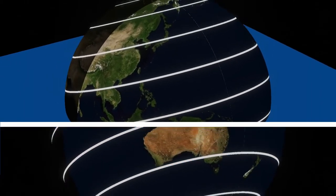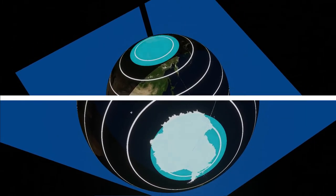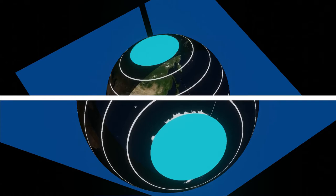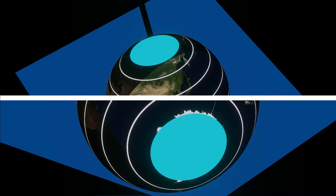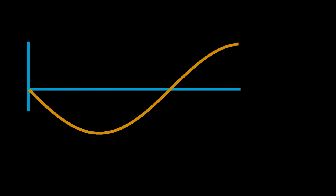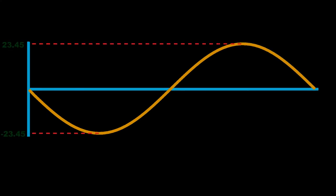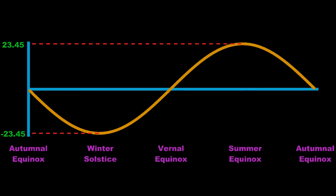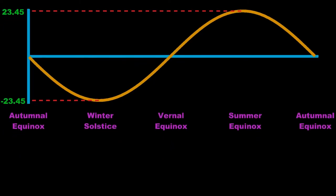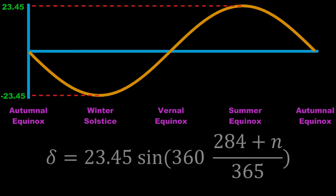A very strange fact happens at the north pole and the south pole: they will have full 24 hours of either day or night, depending on summer or winter. This is a graph that shows the value of the declination angle through the year. The formula used to find the declination angle at any time uses n, which represents the number of the day, where January 1st equals 1 and December 31st equals 365.